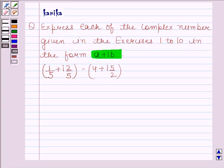The given complex number is (1/5 + i·2/5) - (4 + i·5/2). Before solving this question, we should understand how to find the difference of two complex numbers.